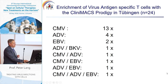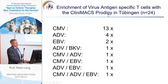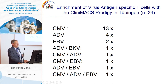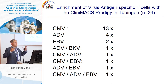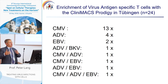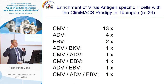The enrichment of virus antigen-specific T cells with the Prodigy has now been done in 24 patients. Most patients received a single-specific T cell preparation, but several also received a double-specific or triple-specific preparation. We call these multi-specific T cells. However, this is not one T cell with three specificities, but rather a mixture of three T cell subtypes, each with one specificity against a different antigen.